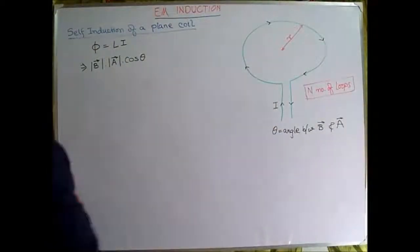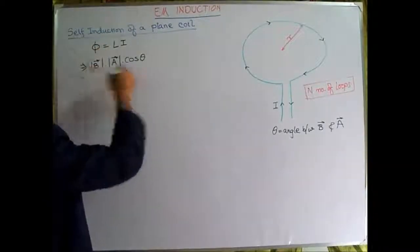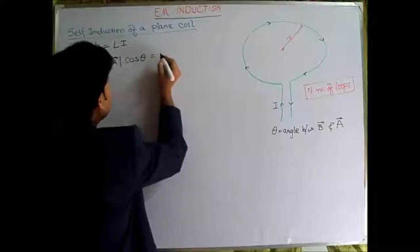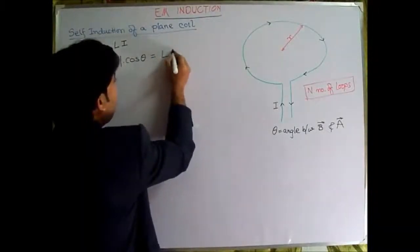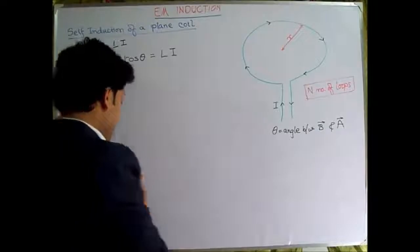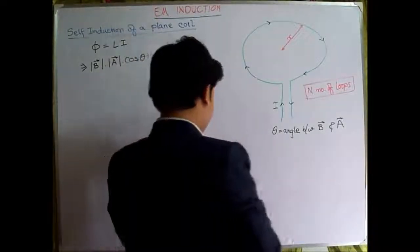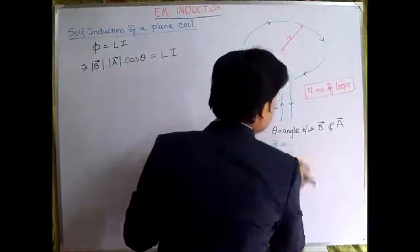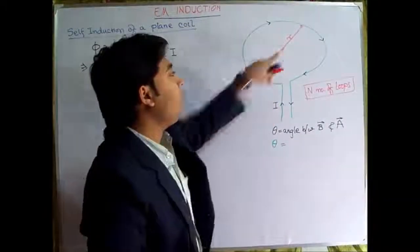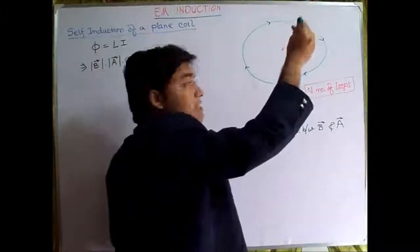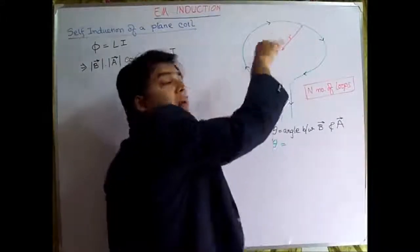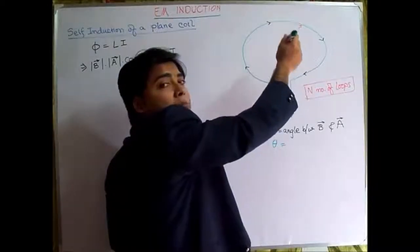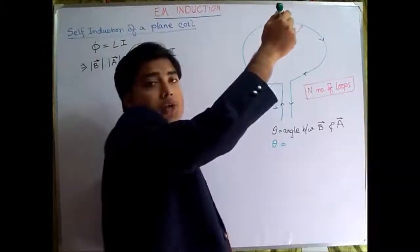Now, this term will be φ, which will be equal to LI. In this scenario, if we take this φ, the area is coming out or going in, and if the B is also made as such, that it is coming likewise only.